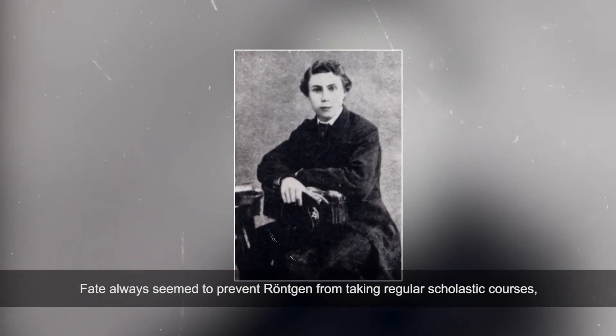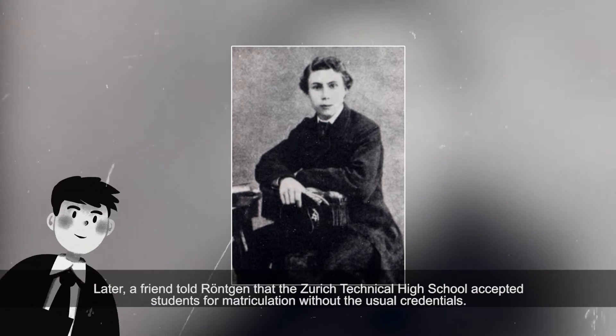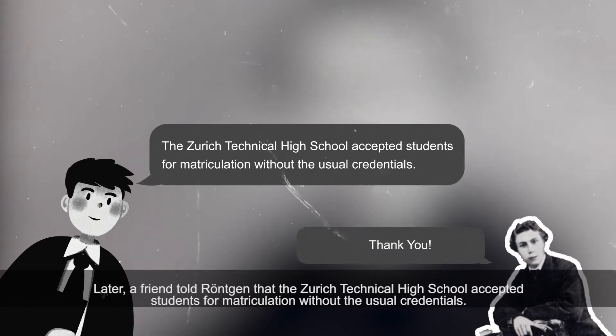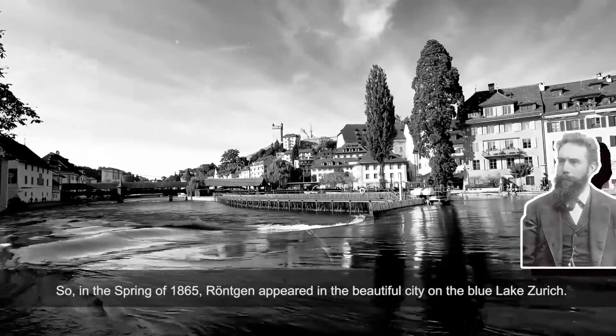Fate always seemed to prevent Röntgen from taking regular scholastic courses. Later, a friend told Röntgen that the Zurich Technical High School accepted students for matriculation without the usual credentials. So in the spring of 1865, Röntgen appeared in the beautiful city on the blue lake, Zurich.